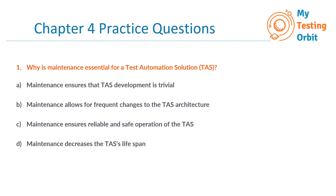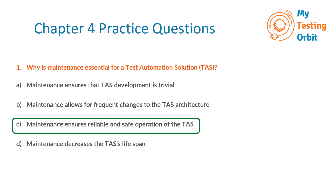The correct option is C: Maintenance ensures reliable and safe operation of the TAS. Maintenance involves activities that help adapt the TAS to new systems, support new software environments, and ensure compliance with laws and regulations. This ensures that the TAS continues to function effectively and safely.